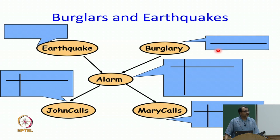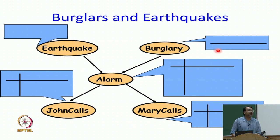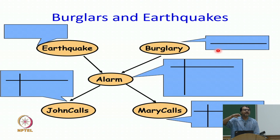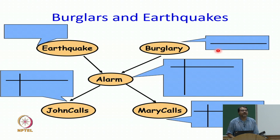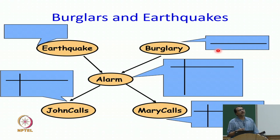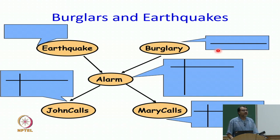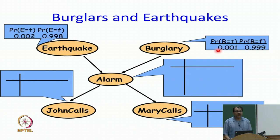This is our graph structure. Let us see in how many parameters I can represent each node. We have said that for every node we will represent the probability of that random variable given all the parents. For earthquake, we just need one parameter because earthquake has no parent. We simply want to represent probability of earthquake and probability of not earthquake, but they sum to 1. So we need 2 parameters for earthquake and burglary.